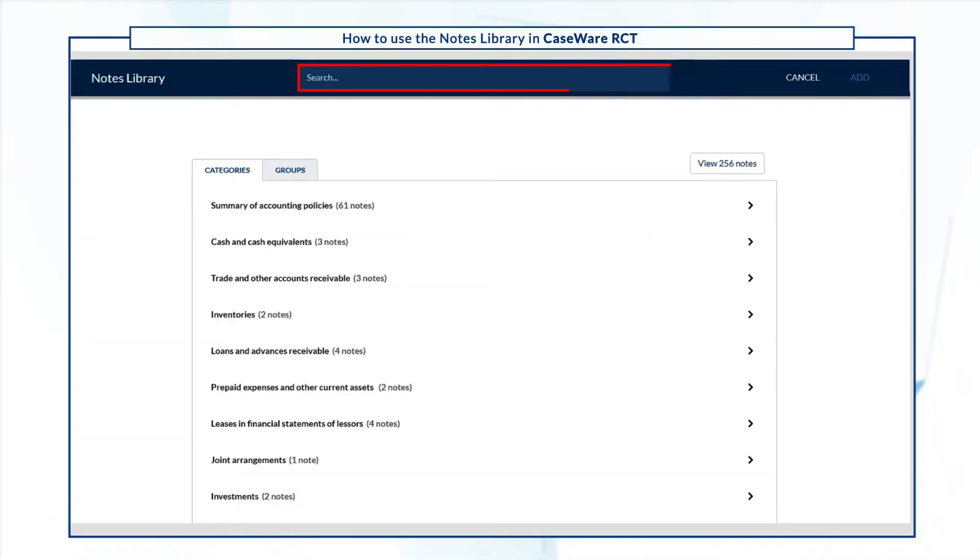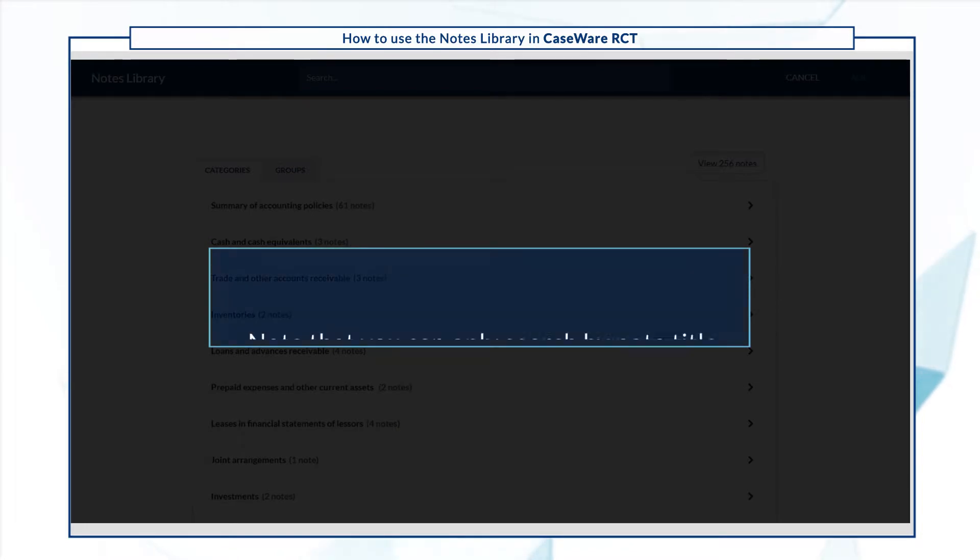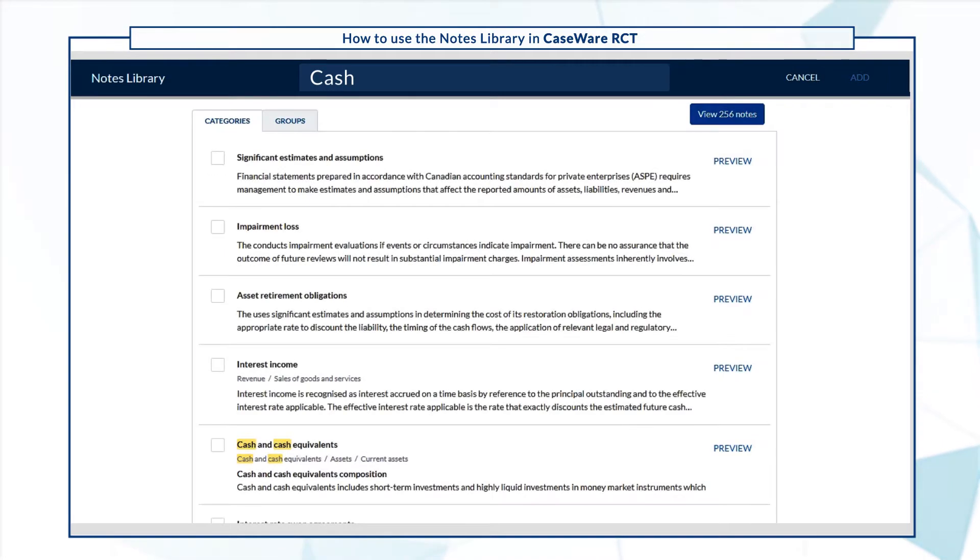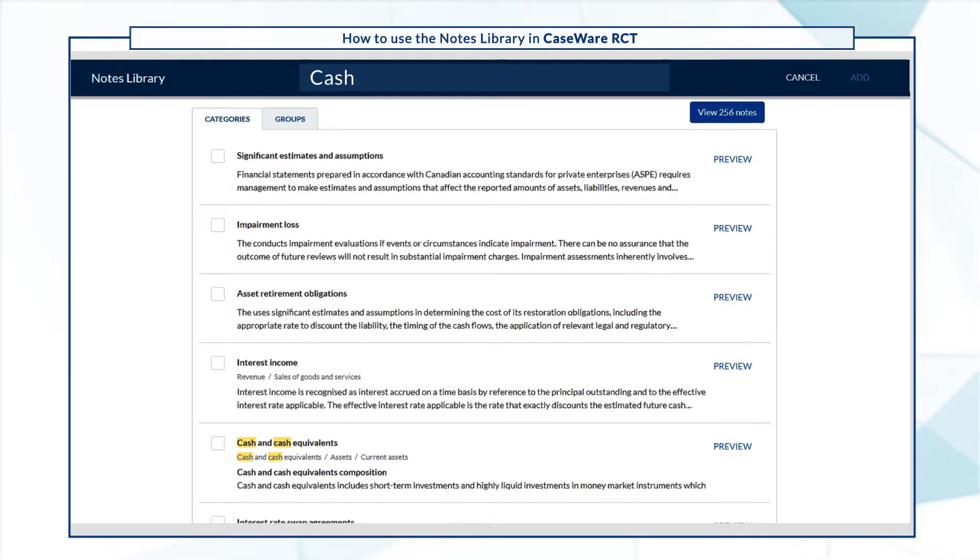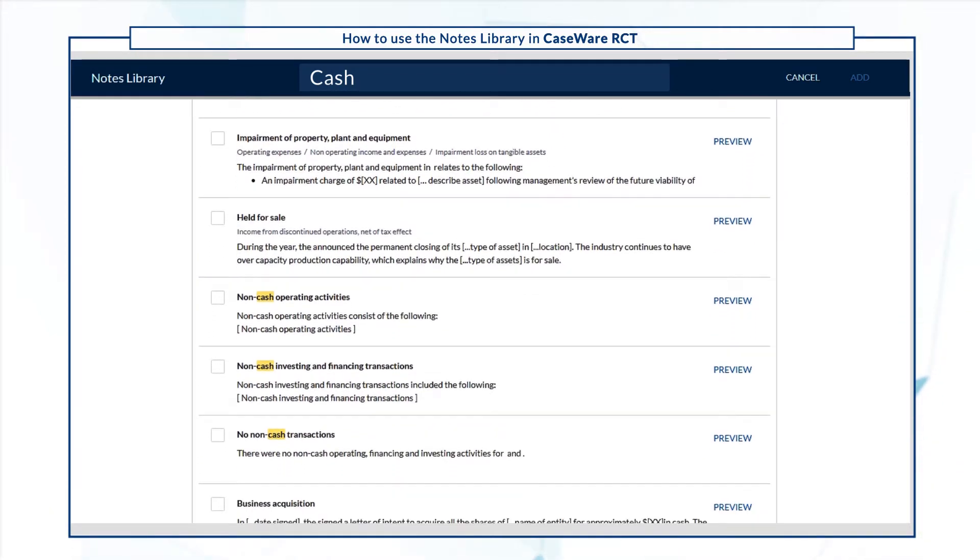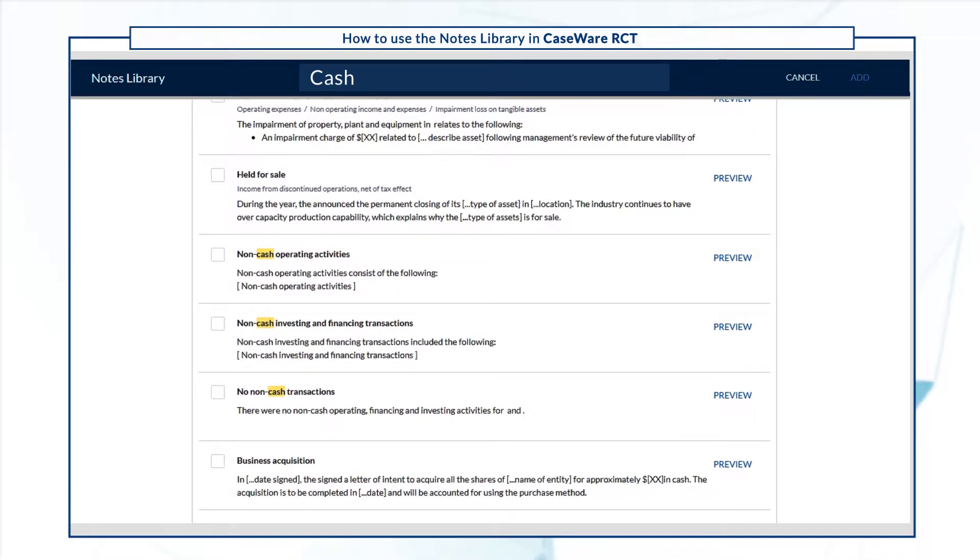You can also search the library to find specific notes. Note that you can only search by note title or Trial Balance group. Let's type cash to find notes related to cash and cash equivalents. The library highlights every note having the word cash in its title and every note related to the cash and cash equivalents Trial Balance group.